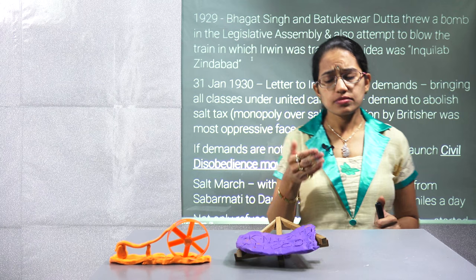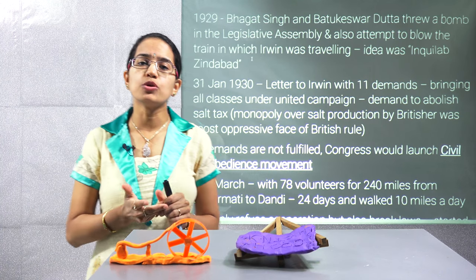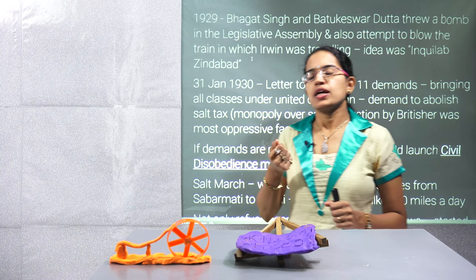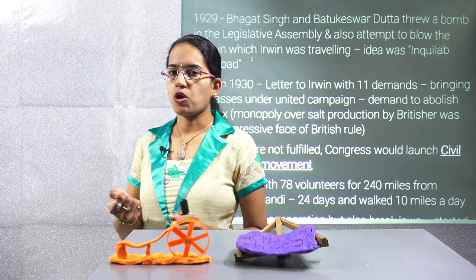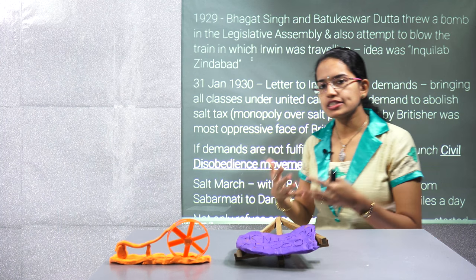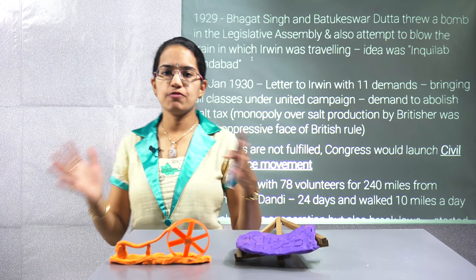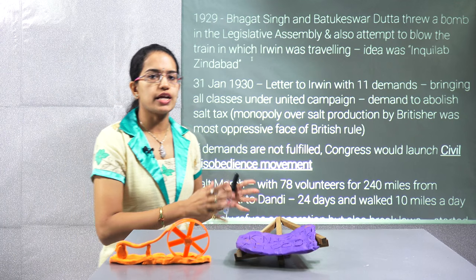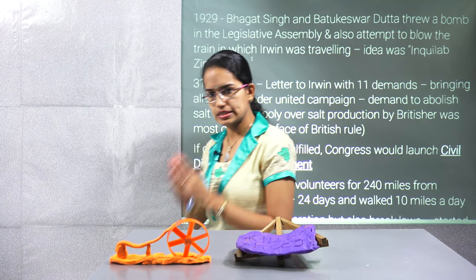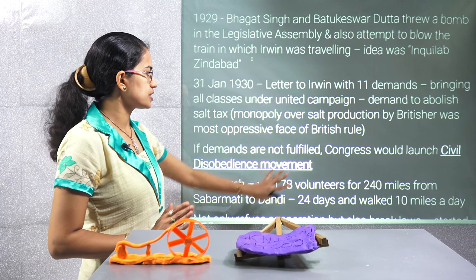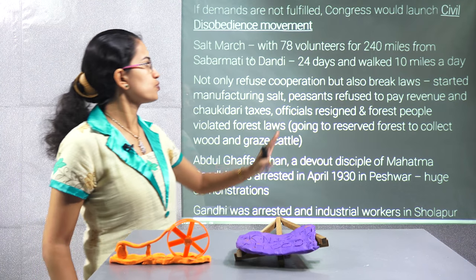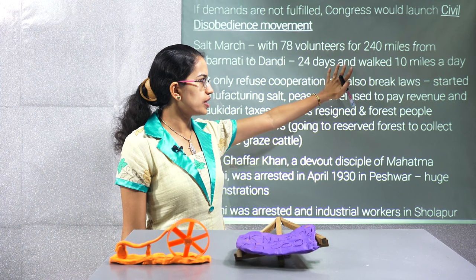The colonial government had been trying to maintain a monopoly over salt production and imposing taxes on salt. Gandhiji and his 78 trusted followers started the Dandi March — the Salt Satyagraha — believing that salt is something available freely in nature. They would go to the coastline, create their own salt, and break the colonial rules. The Salt Satyagraha was one of the first efforts under the civil disobedience movement. The march was from Sabarmati to Dandi and took nearly 24 days to complete.